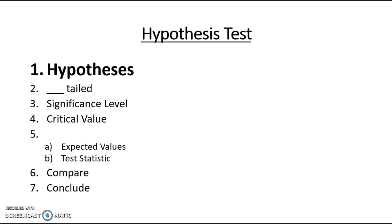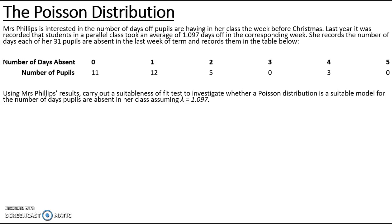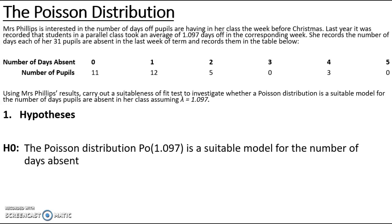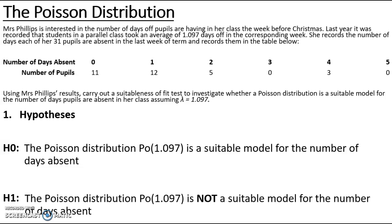Starting with the hypotheses: H0 is always that the model stated is suitable for the data. In context, H0 is that the Poisson distribution Poisson(1.097) is a suitable model for the number of days absent. H1 is the opposite — that the distribution is not a suitable model for the number of days absent.